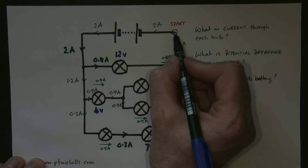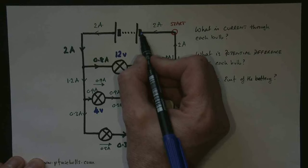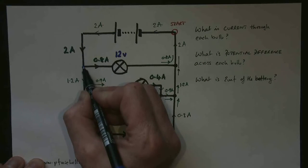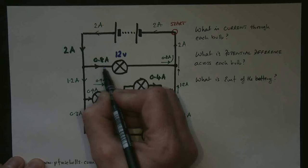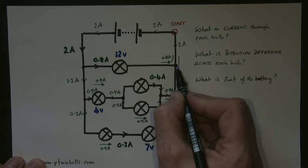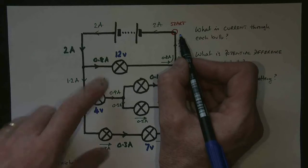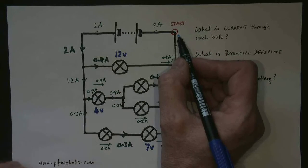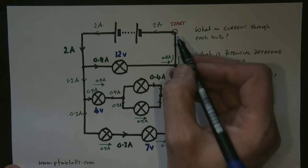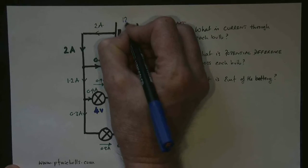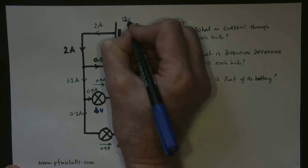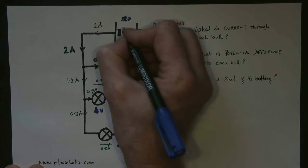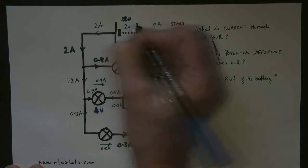We start from here, going in the direction of the current. We have an EMF which we don't know yet. We'll do the simplest loop: we come down here, we have a potential difference of 12, and back to our start. So we have one potential difference of 12 volts and one EMF which we don't know. The EMF must equal the potential difference, and therefore that must be 12 volts.